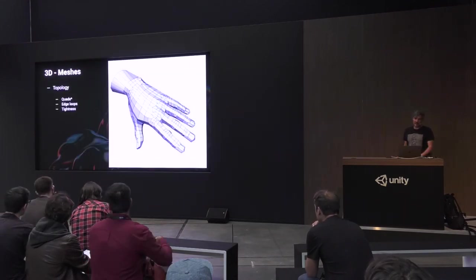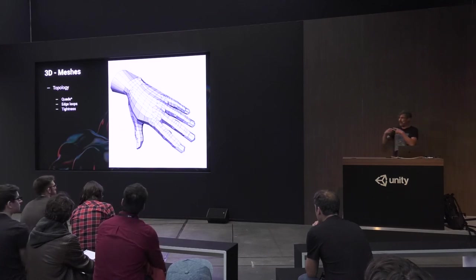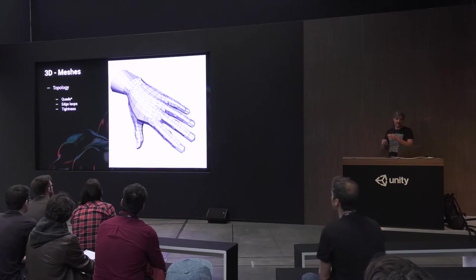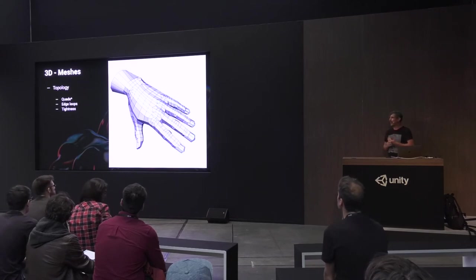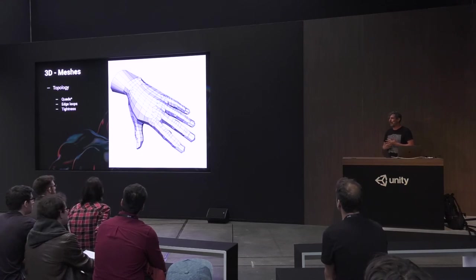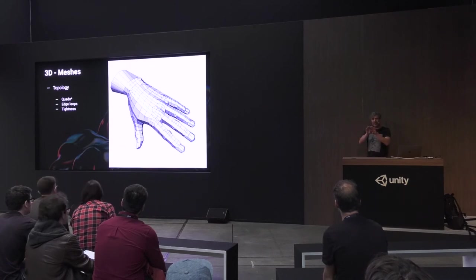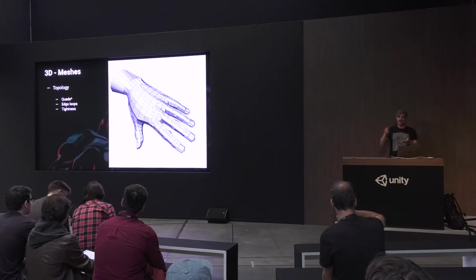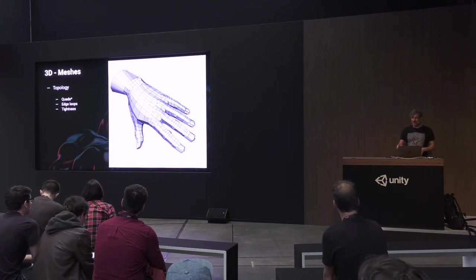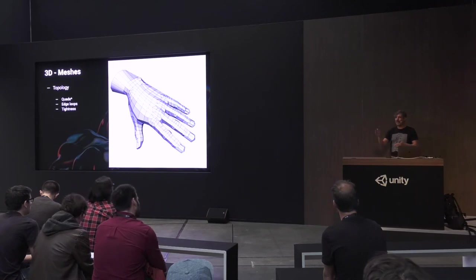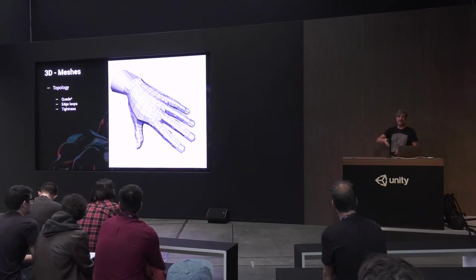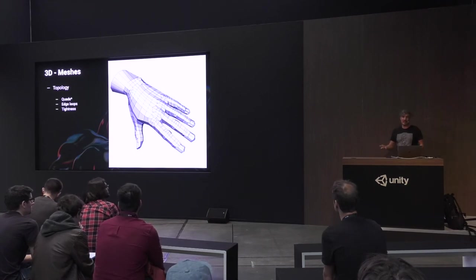For topology, you want nice edge loops for deformations — keep it quads — and make sure the vertices are merged. In Unity, VR, AR, and mobile, when you start noticing problems like baking artifacts where walls connect, it's often because there's a super slight gap between things. Merge as many vertices as possible, keep it tight, keep edge loops, keep it quads. If your models are triangulated before they go into Unity, you can't edit them, UV map them, or change things.